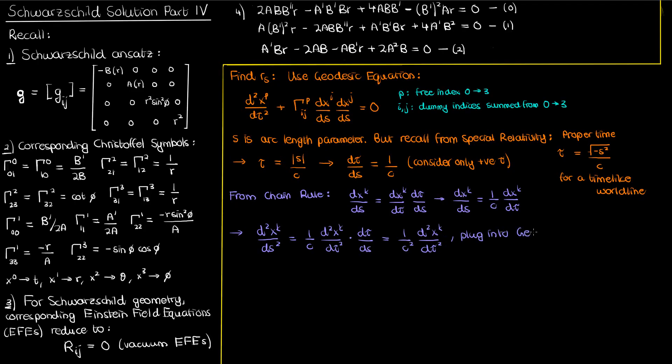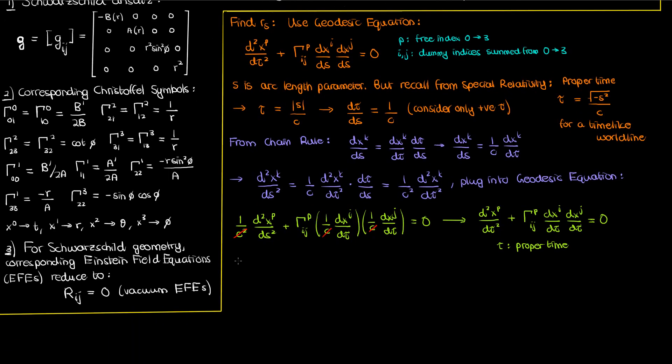If we plug these expressions in for the first and second derivatives into our geodesic equation, we get the exact same equation but this time with a factor of 1 over C squared out front, and also now we're differentiating with respect to tau. We can easily cancel out this factor of 1 over C squared and get a more polished geodesic equation, but now in terms of proper time instead of the arc length parameter. So this makes things pretty convenient.